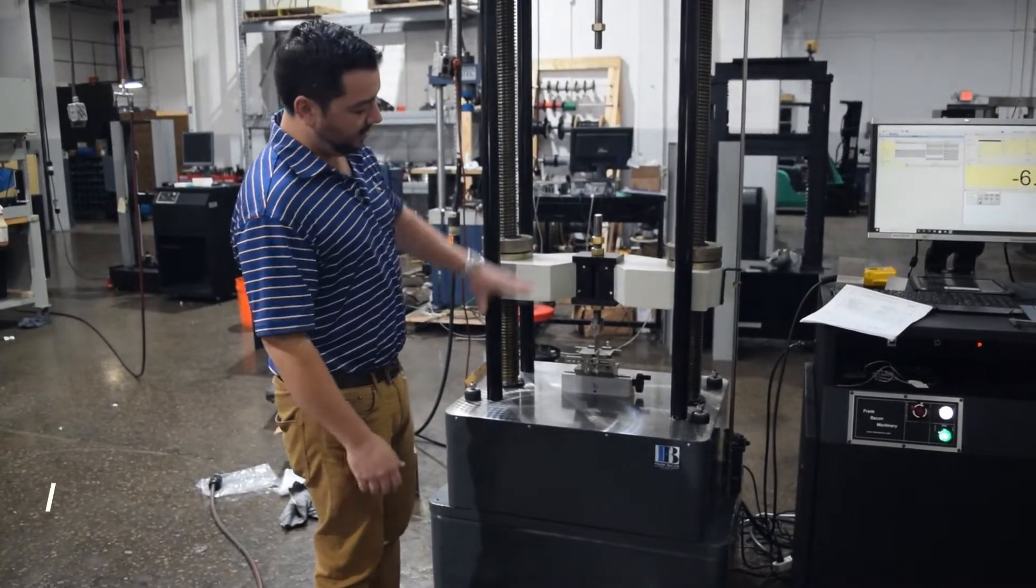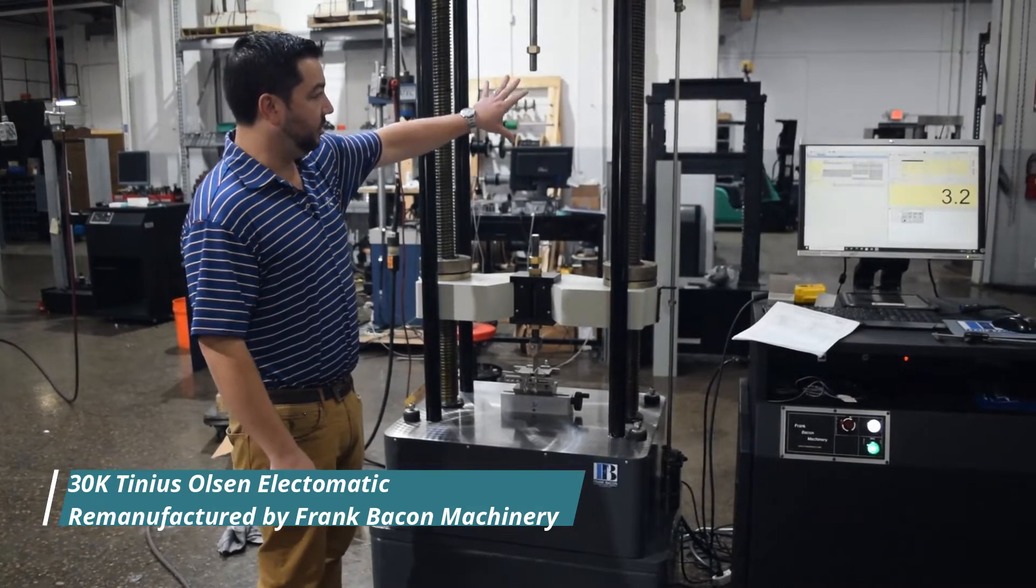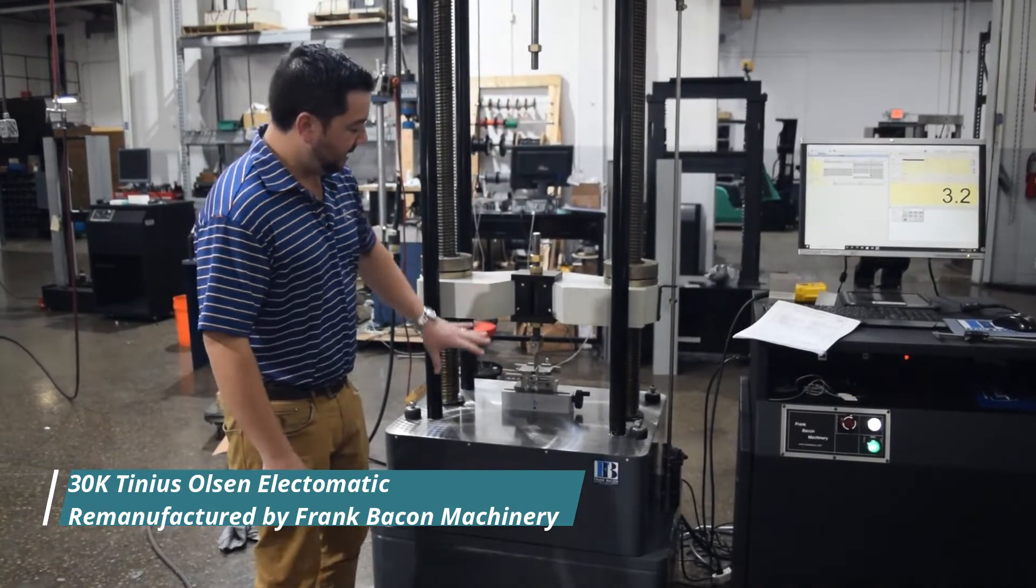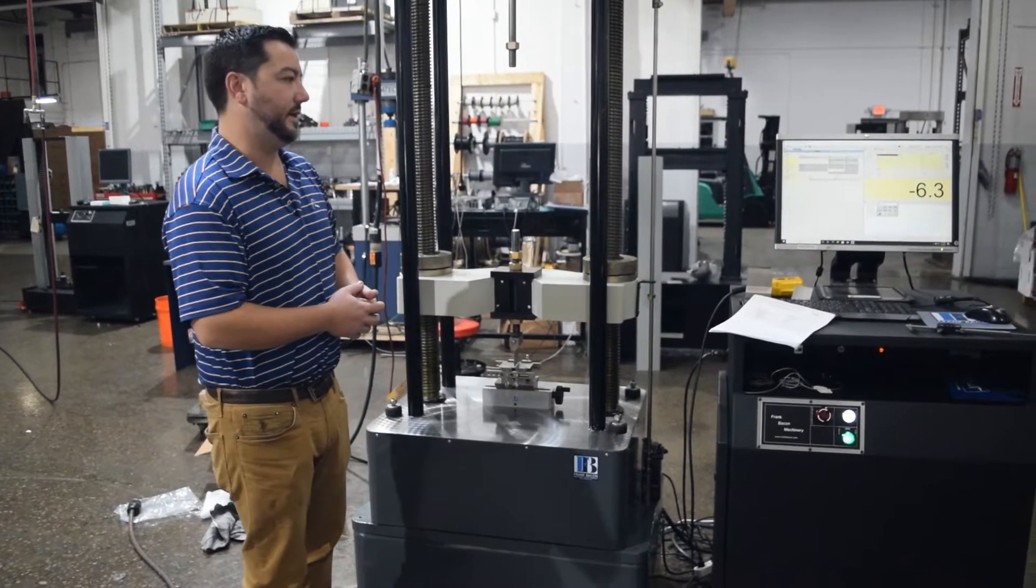Today we have the 30K Electromatic, which is a dual space machine. Customers are able to do tensile testing on the top and bend testing on the bottom without having to remove or change fixtures at any time. It works out really well for them.